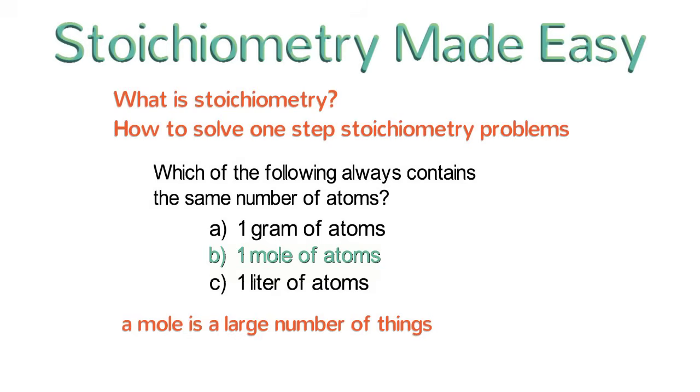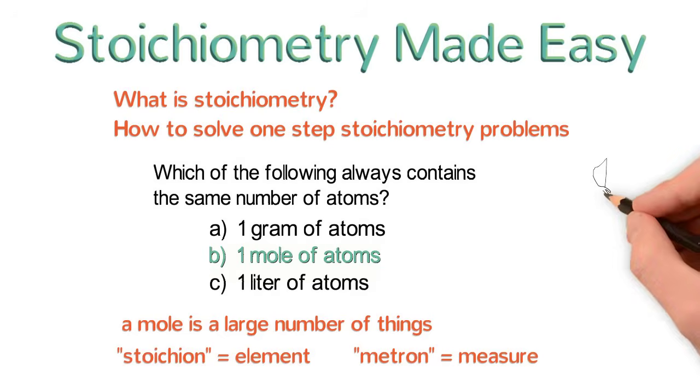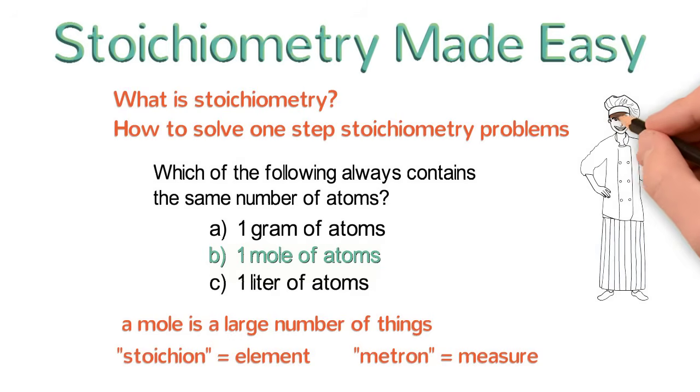So, what in the world is stoichiometry? The word comes from two Greek roots: stoikion, which means element, and metron, which means measure. Basically, stoichiometry is a scientist's way of measuring elements and other chemicals in a chemical reaction. It's a lot like the way a chef measures the ingredients of a recipe.